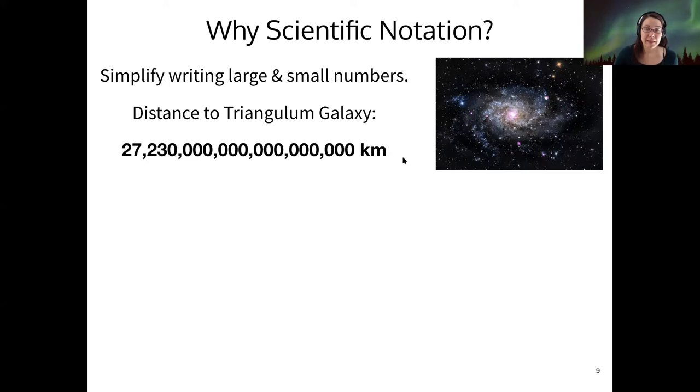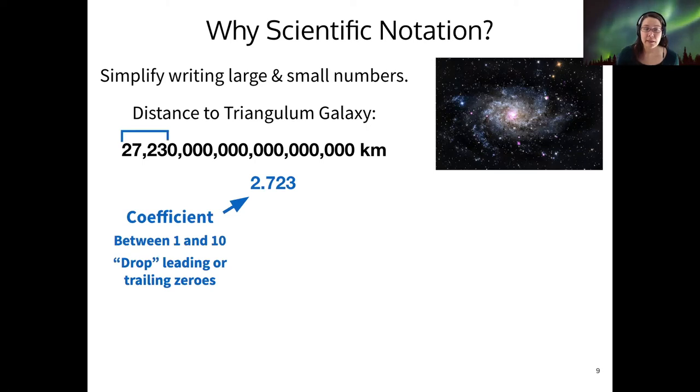And that number can be expressed in Scientific Notation in the following way. First, you find the coefficient of the number, which has to be something between 1 and 10. You drop all the zeros after that number or before that number. And so 2.723 is the coefficient of this number in standard form.